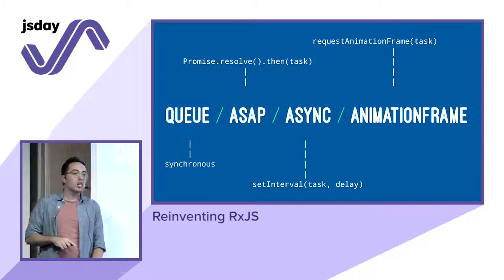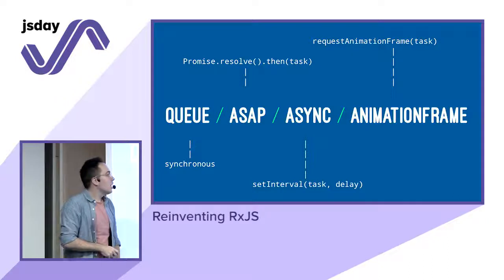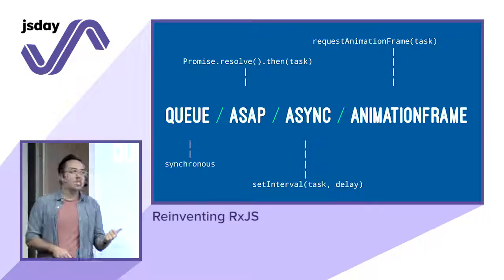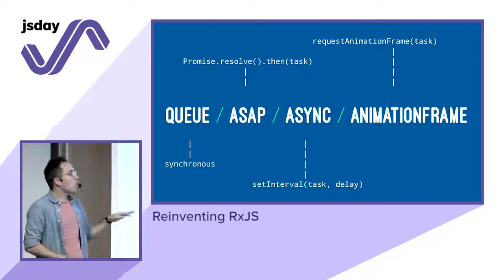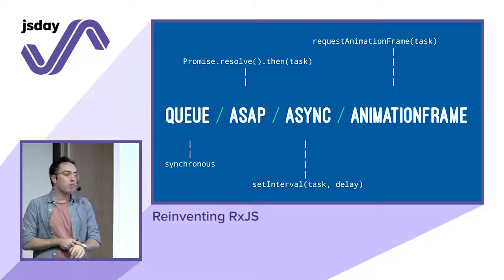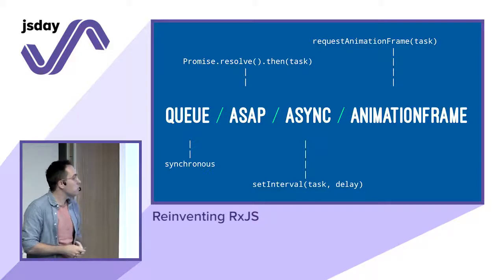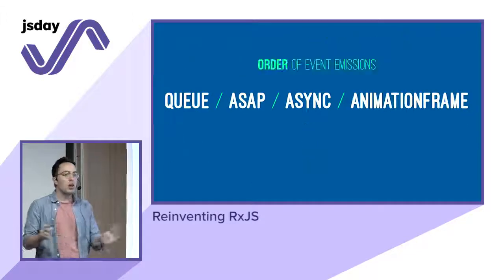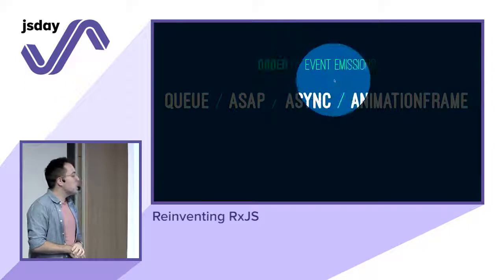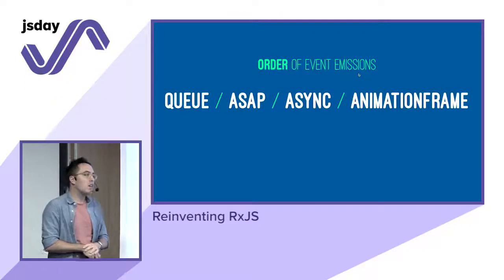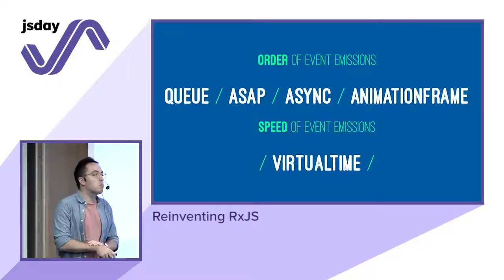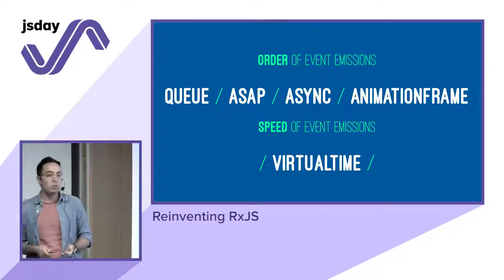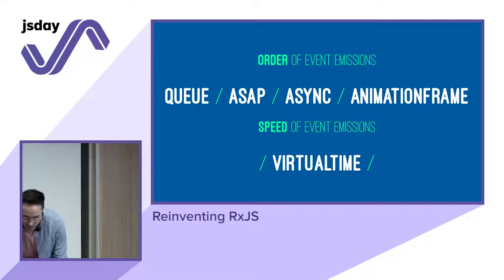After everything runs, we get `asap` first and then `async`. So we know the order: queue is the synchronous one, then asap which is slightly faster than async. These are the four schedulers that control order of event emission: `queue`, `asap`, `async`, and `animationFrame`. Queue works synchronously. Asap works roughly like a `Promise.resolve().then()`. Async works internally like `setInterval`. AnimationFrame is what you should use when dealing with animation — it uses `requestAnimationFrame` internally.